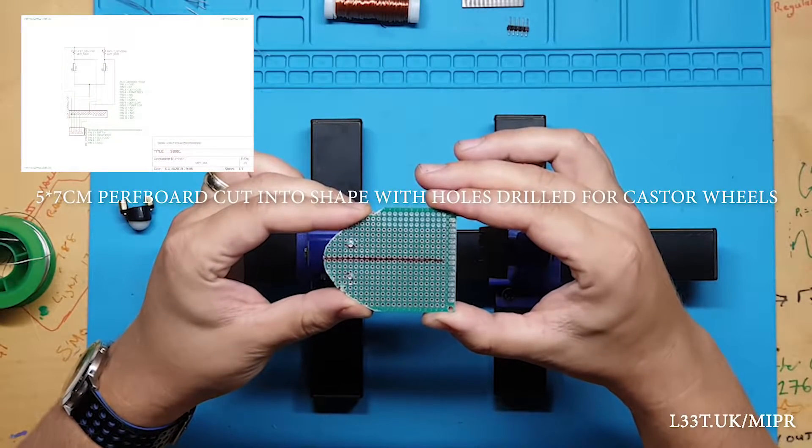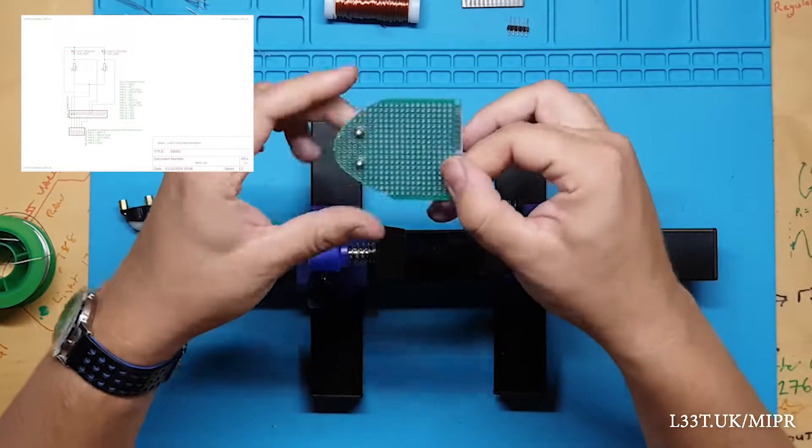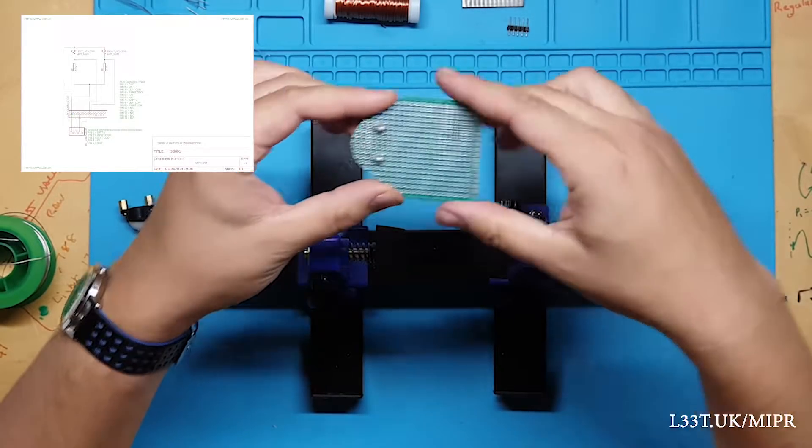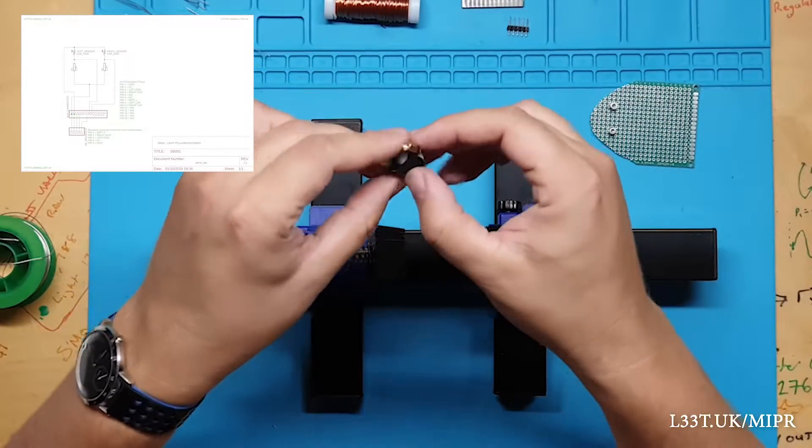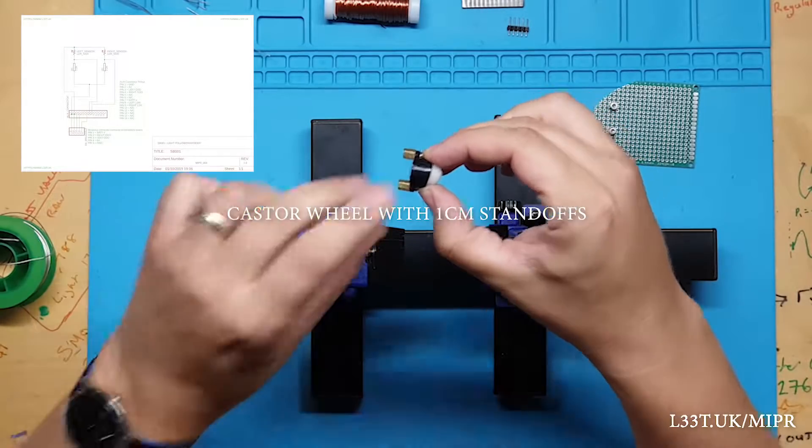This is a piece of perfboard that I have drilled some holes in for the caster wheel and rounded off the edges with some scissors. This is a caster wheel.